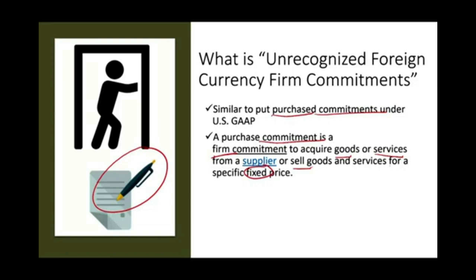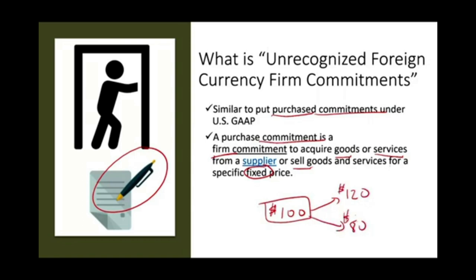When you lock in a price to buy or sell something in the future, the price could change and that change could harm you. For example, assume you want to buy something and you lock the price now at $100. Let's say it's a textbook. By the time the semester starts, the textbook is selling for $120 — you did good. But if the textbook is selling at $80, you didn't do well because now you have to buy it at $100 when the current price is $80.